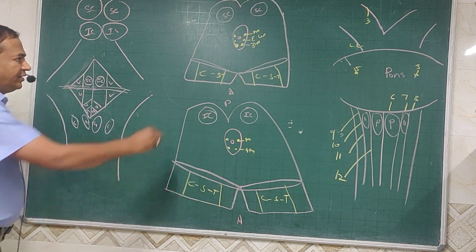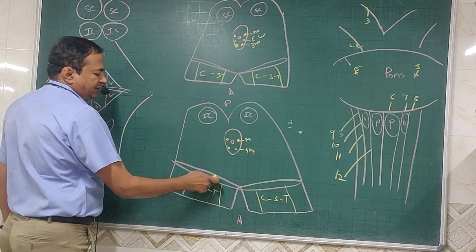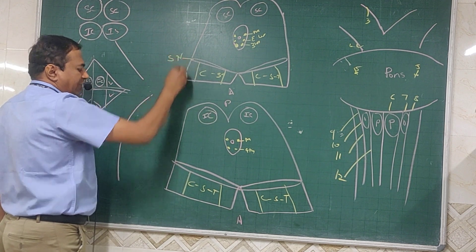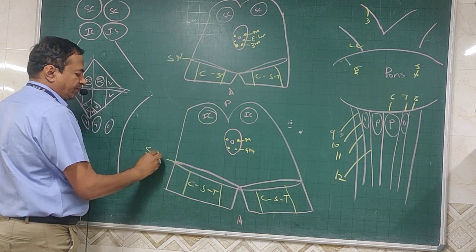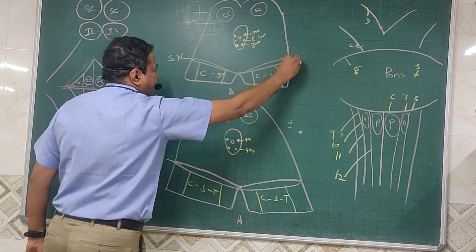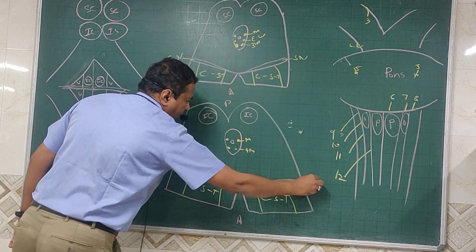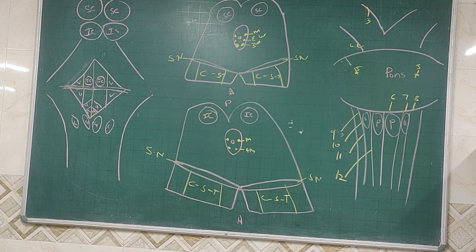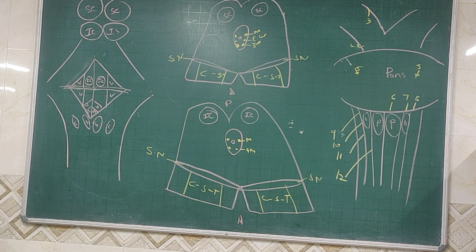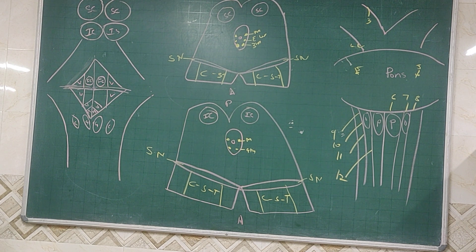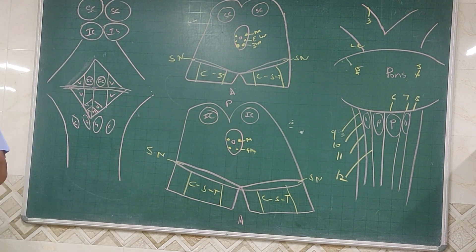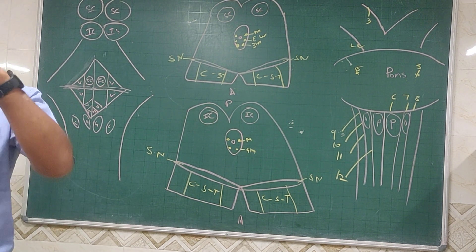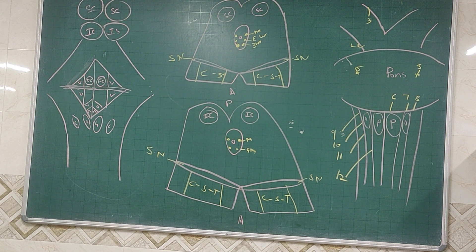Here we see what is called the substantia nigra. The substantia nigra is connected to the basal nuclei. It has a kind of depressing effect on the basal nuclei and secretes dopamine.